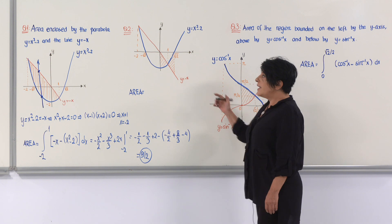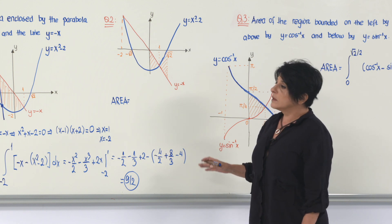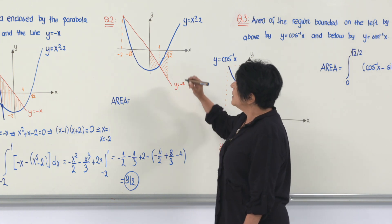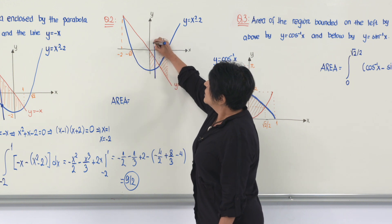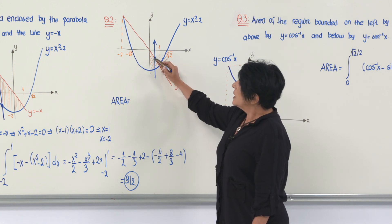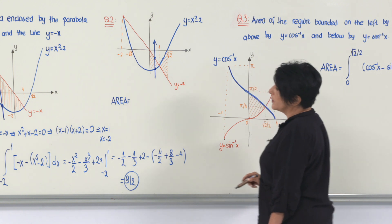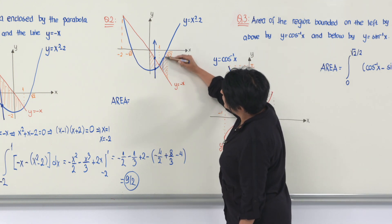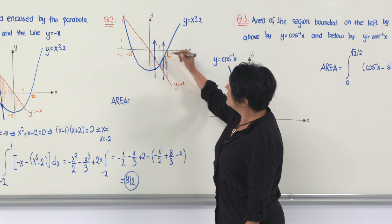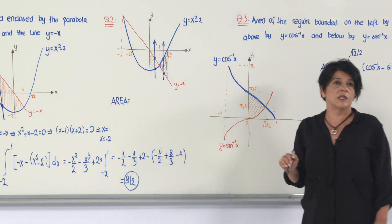But what if instead of that region, they ask about a different region? The intersection points don't change, but now when I draw a line parallel to the y-axis to decide which curve is bigger, I find that the bigger curve actually changes across the region. For one sub-region, the arrow leaves from the line and enters from the parabola, but for the blue sub-region, it leaves from the parabola and enters from the line. That's why we need two integrals.